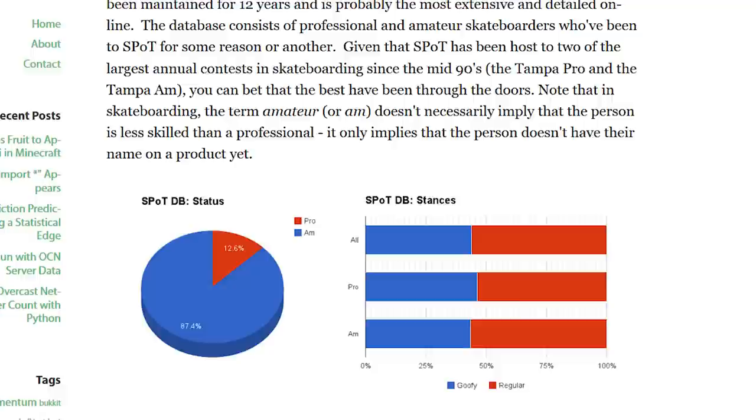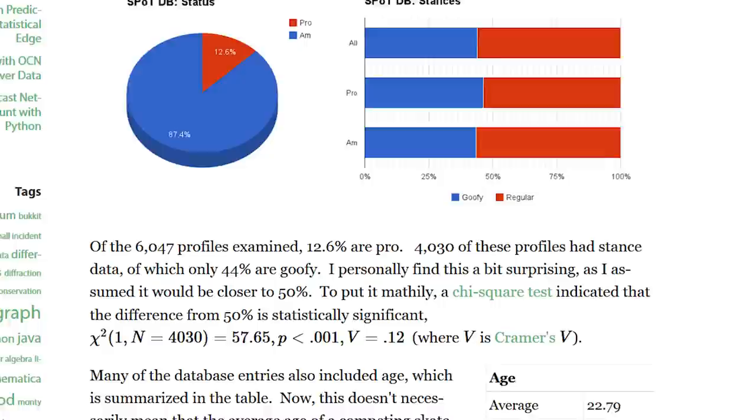I found some better numbers on skateboarding though. In a poll of over 1,500 responses on Skaters Cafe, the number is about 56% regular. The skate park of Tampa, they keep a database of skaters who have come to their park, and they have stance information on over 4,000 of them. And that number is actually exactly the same. 56% regular, 44% goofy.